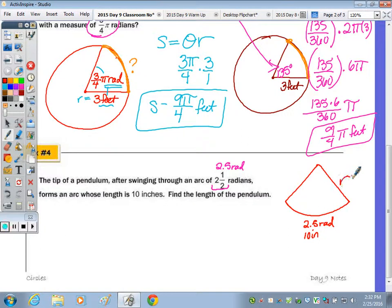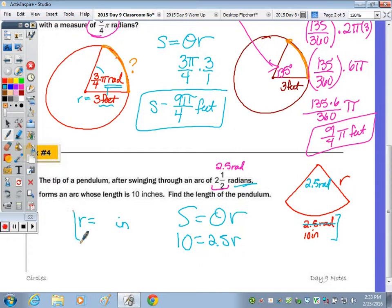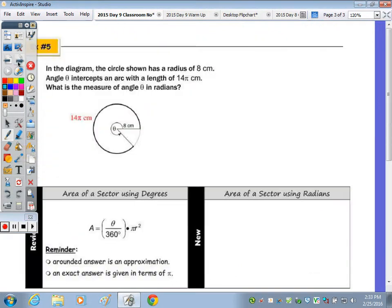So, the tip of the pendulum, it swings through an arc of two and a half radians. It says it forms an arc whose length is 10 inches. Find the length of the pendulum. The length of the pendulum is actually the radius of the circle, correct? However, how can we, what makes it confusing is that you have both of these measurements right here for the arc. Where can you get rid of one and move it to another spot? Yeah. The 2.5 radians, I can move to where? The central angle. Very good. So, now if I want to find the radius, my angle's in terms of radians, so I can use SOAR. S equals theta R. 10 is my arc length. My angle is 2 and a half times R. Divide 10 by 2 and a half, and the radius is how many inches? 4.